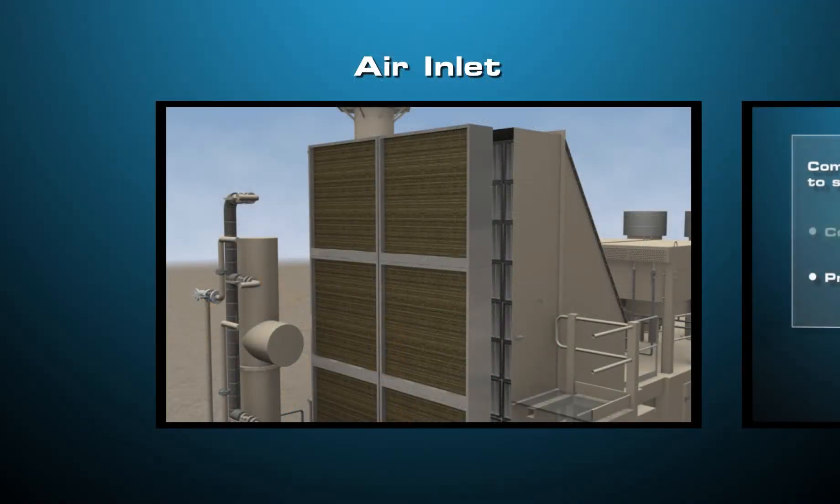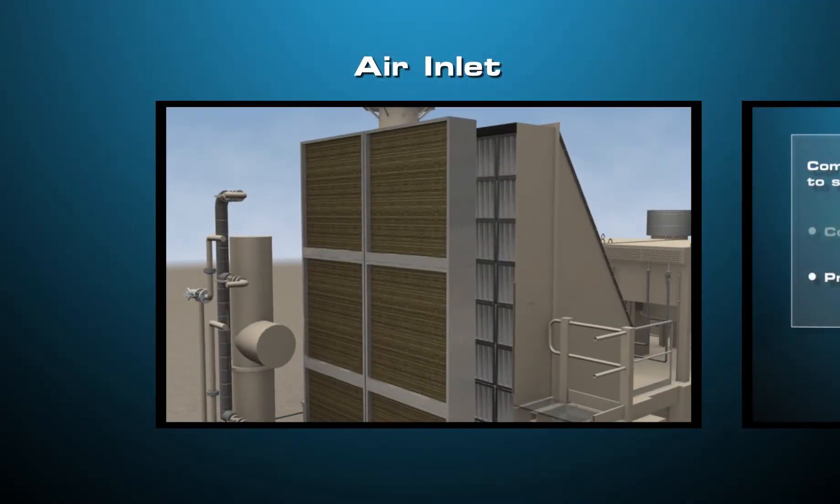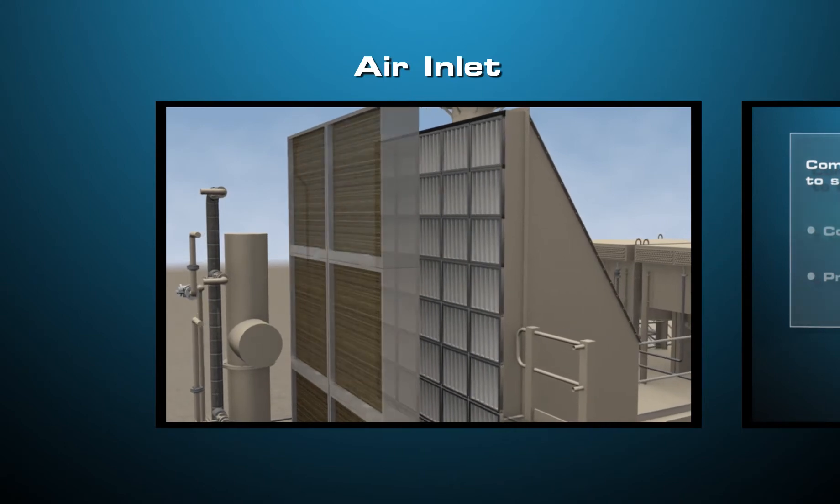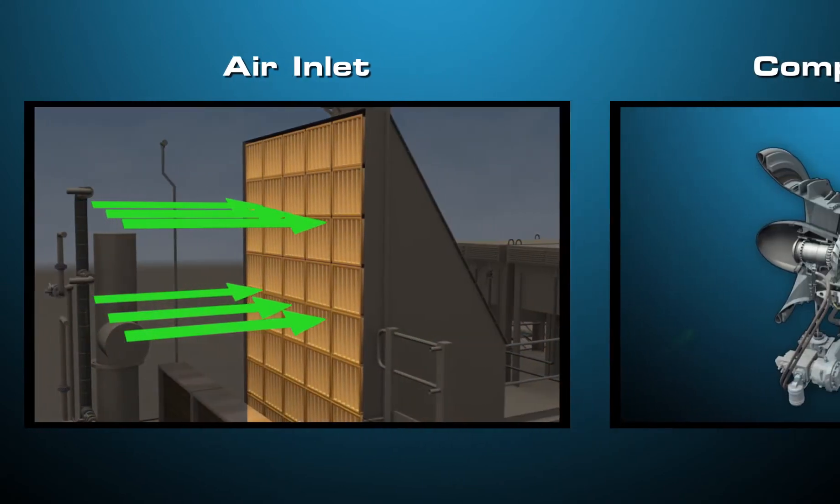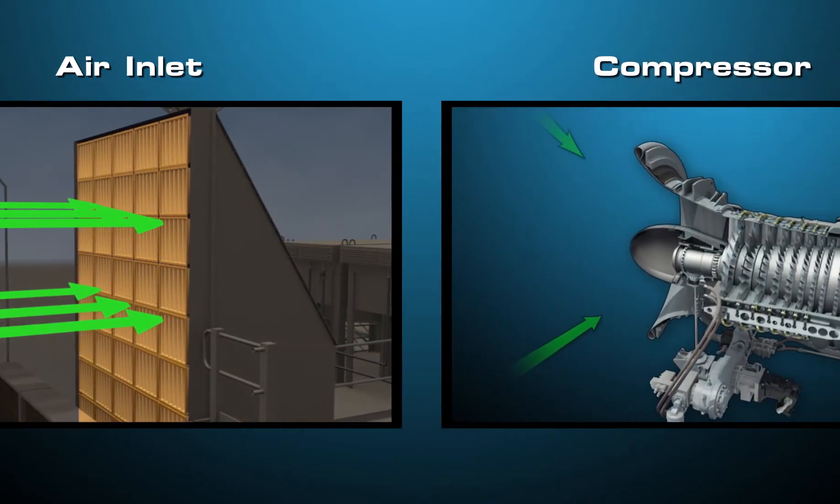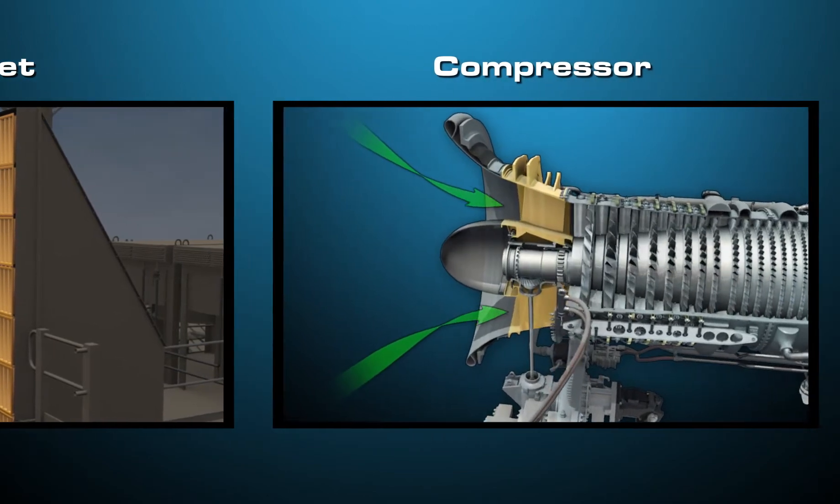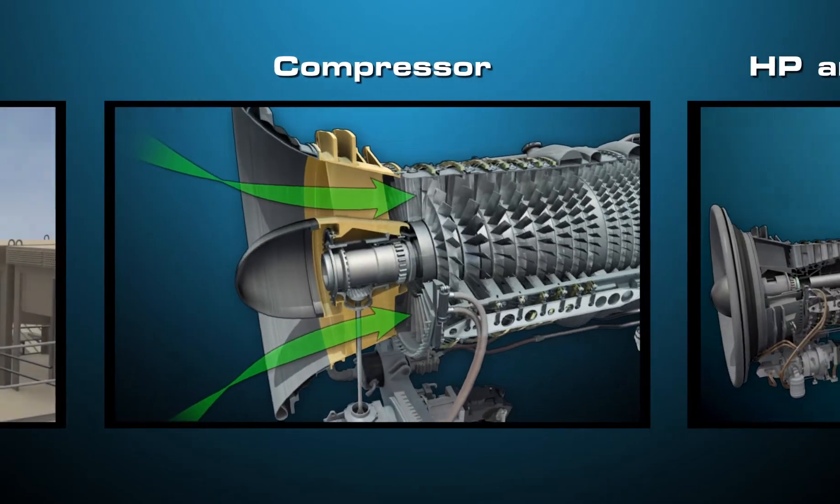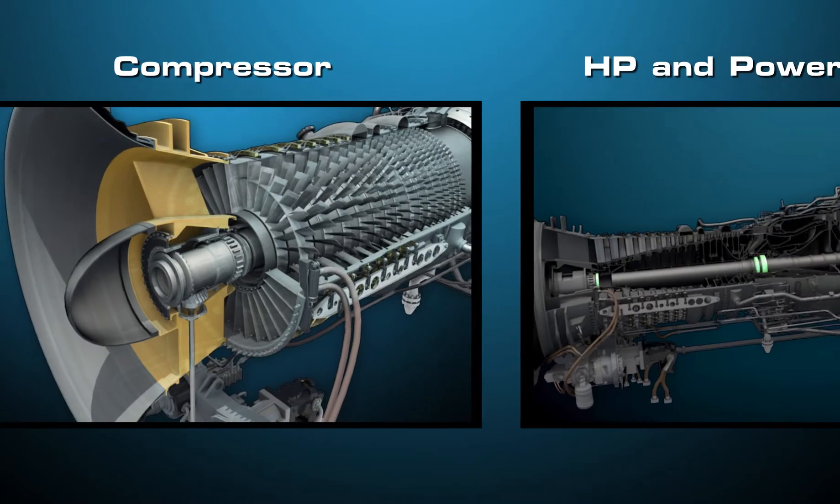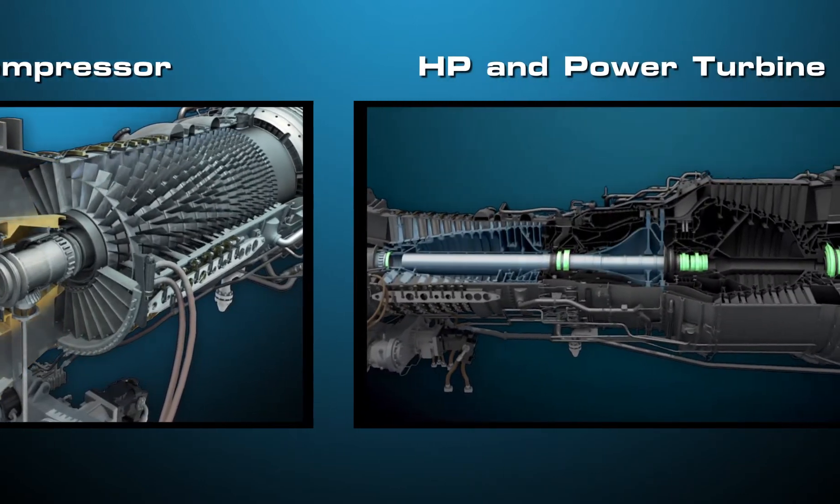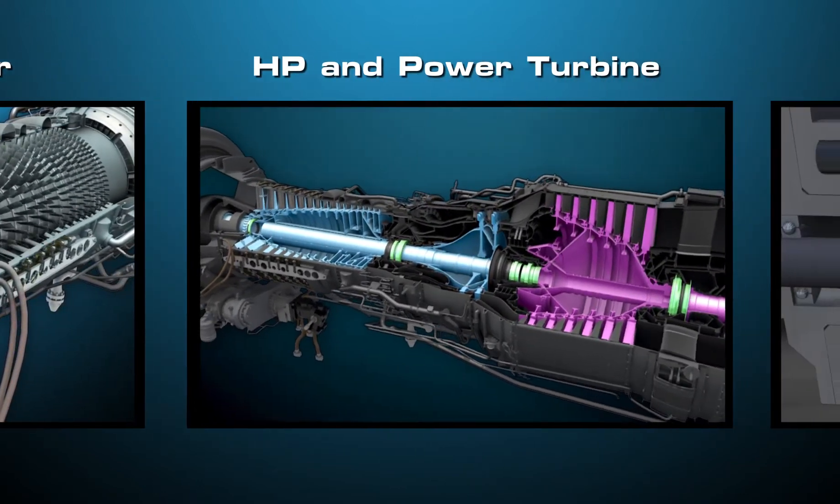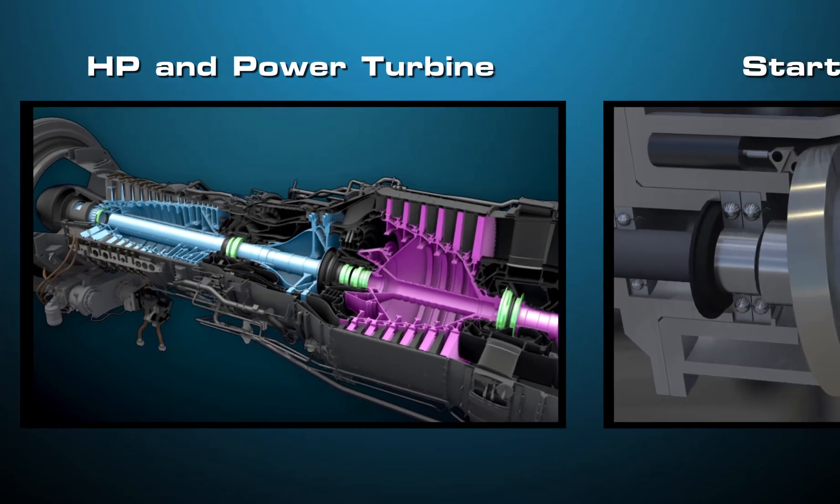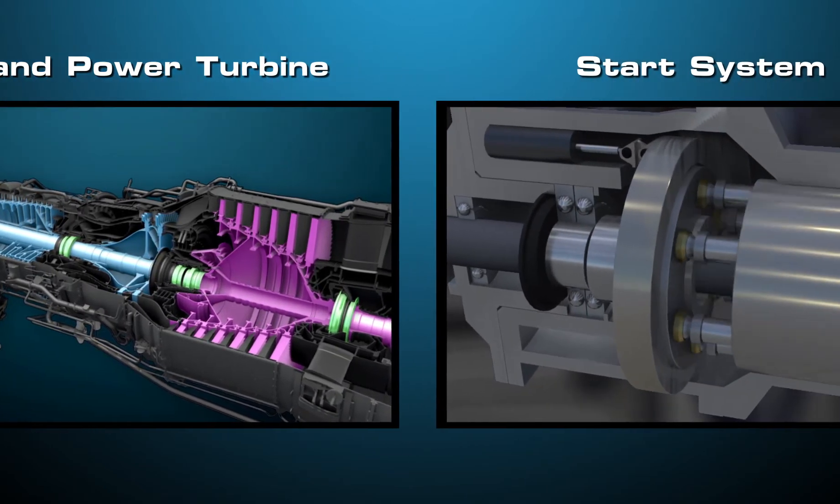An example of a typical TTP main equipment course includes animations for the inlet air system, compressor section, power turbine, and start system.